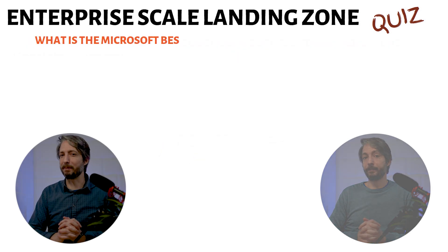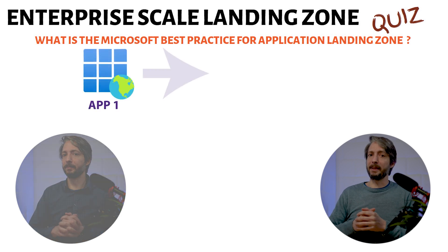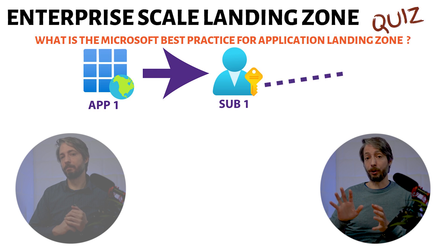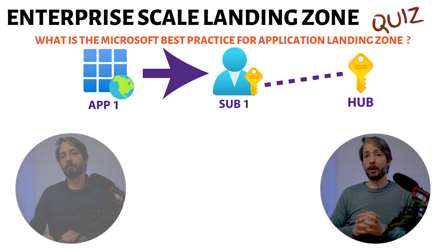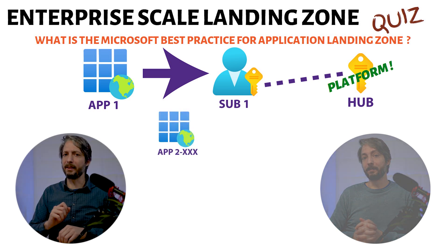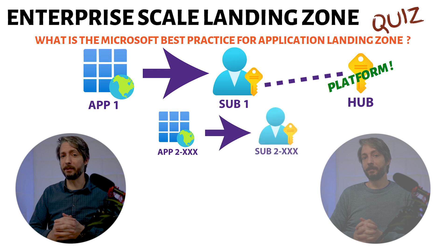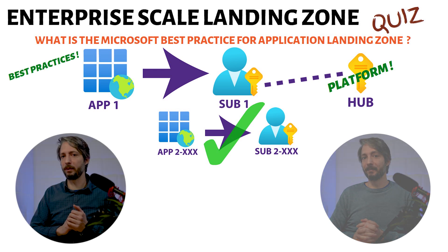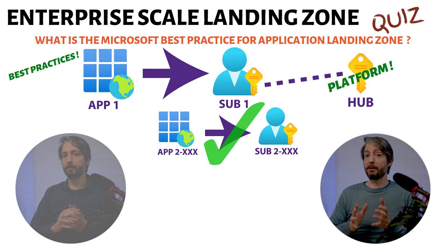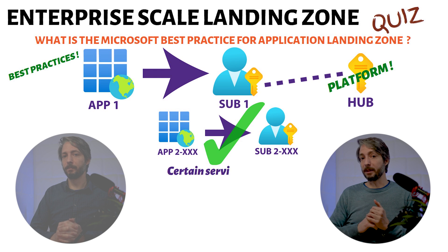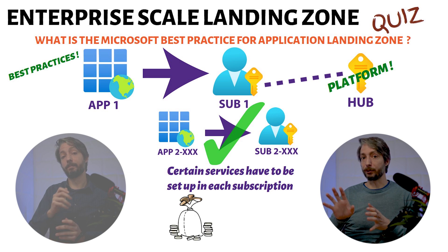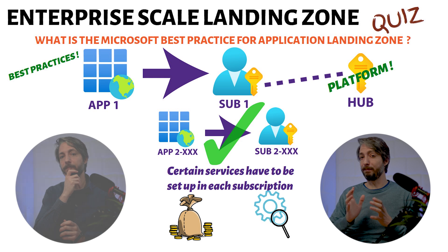What is the Microsoft best practice for application landing zone setups? Microsoft recommends setting up one subscription per application. You would normally pair it to the hub, also known as the connectivity subscription, which is one of the several platform landing zones. So if an enterprise has 300 applications, there should be 300 subscriptions — yes, that's the best practice. However, these are best practices and may not be suitable for every customer. Certain services must be set up in each subscription and cannot be shared, and creating a subscription per application may also increase cost. A thorough analysis must be done before making the final design.